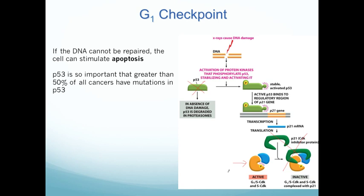That's the cell cycle control system. You need to know how cyclins and cyclin-dependent kinases are regulated and how they work together, the general mechanism for turning the CDK on, and the role of CDK inhibitor proteins in controlling the cell cycle. Email me if you have any questions, and I hope this cleared up some confusion from the lecture.